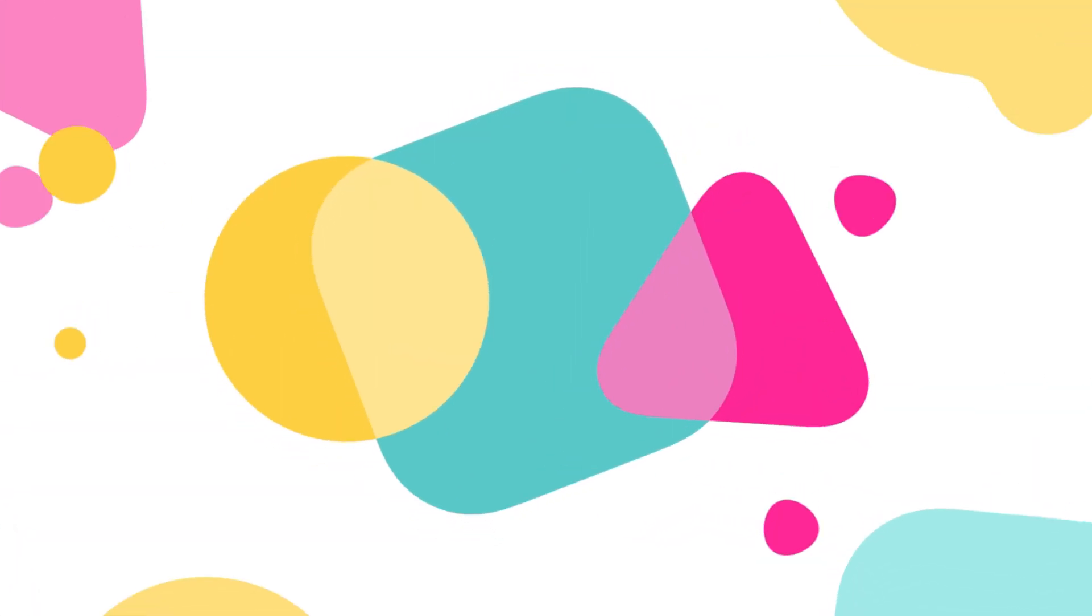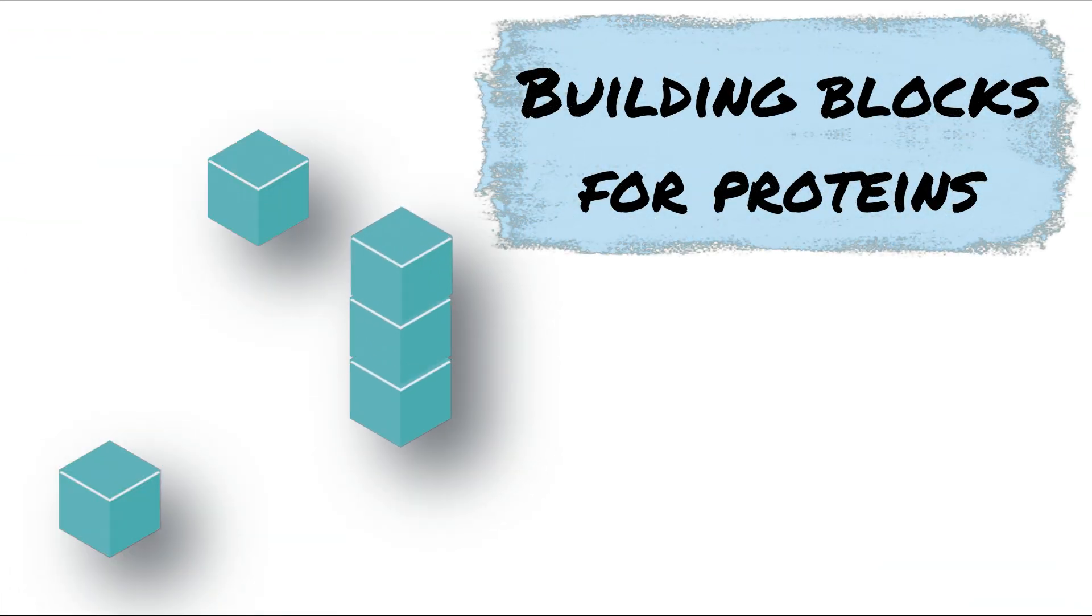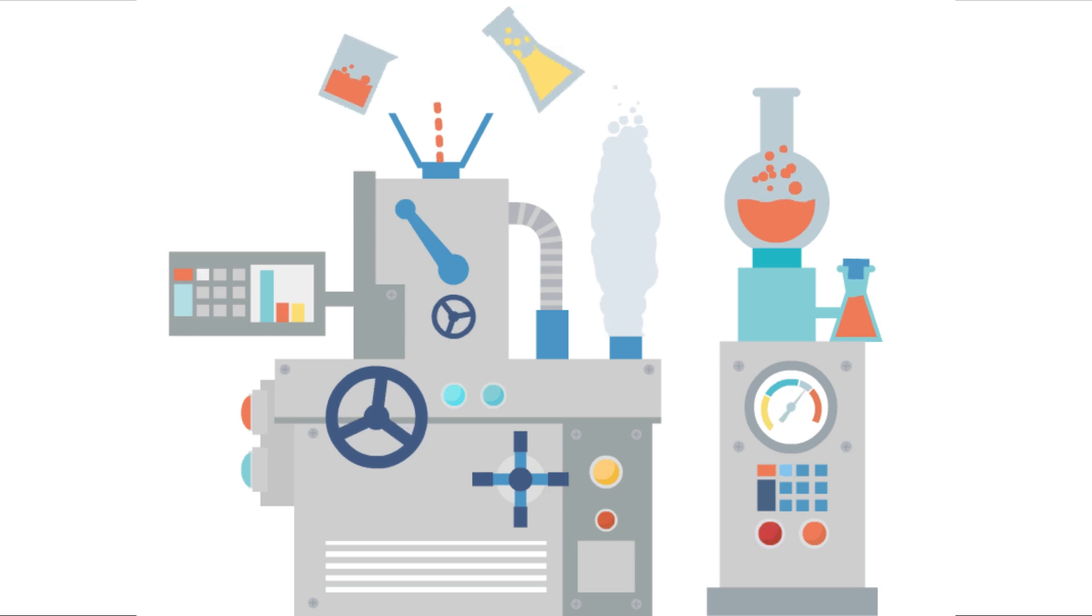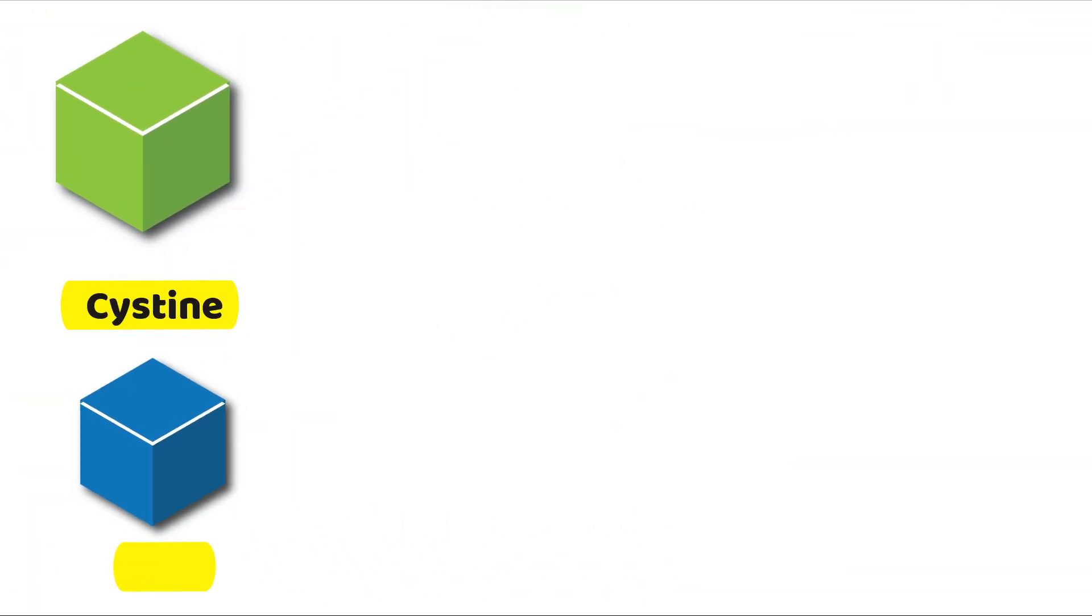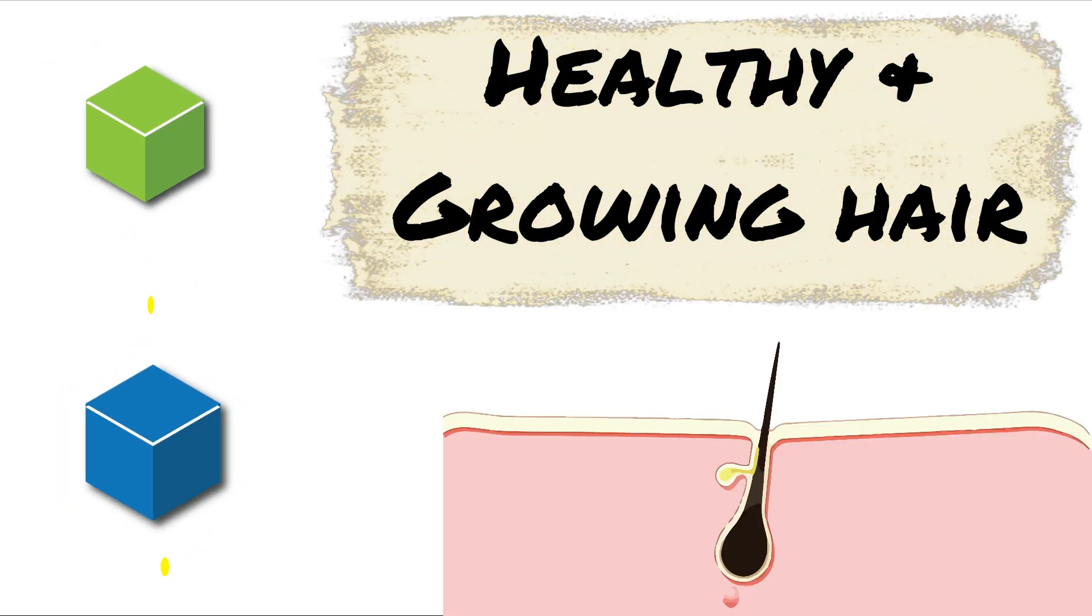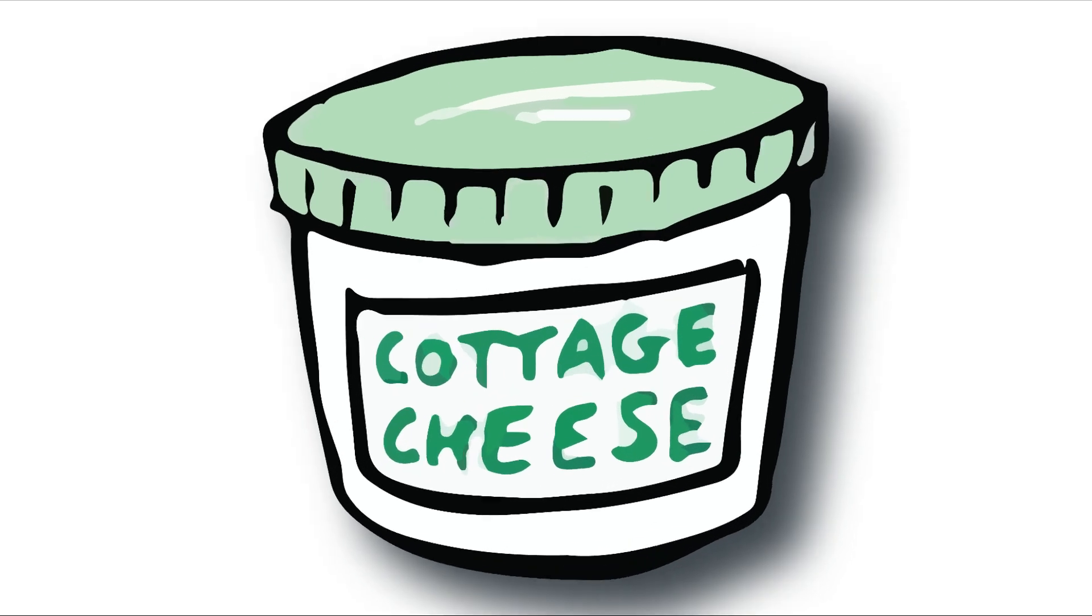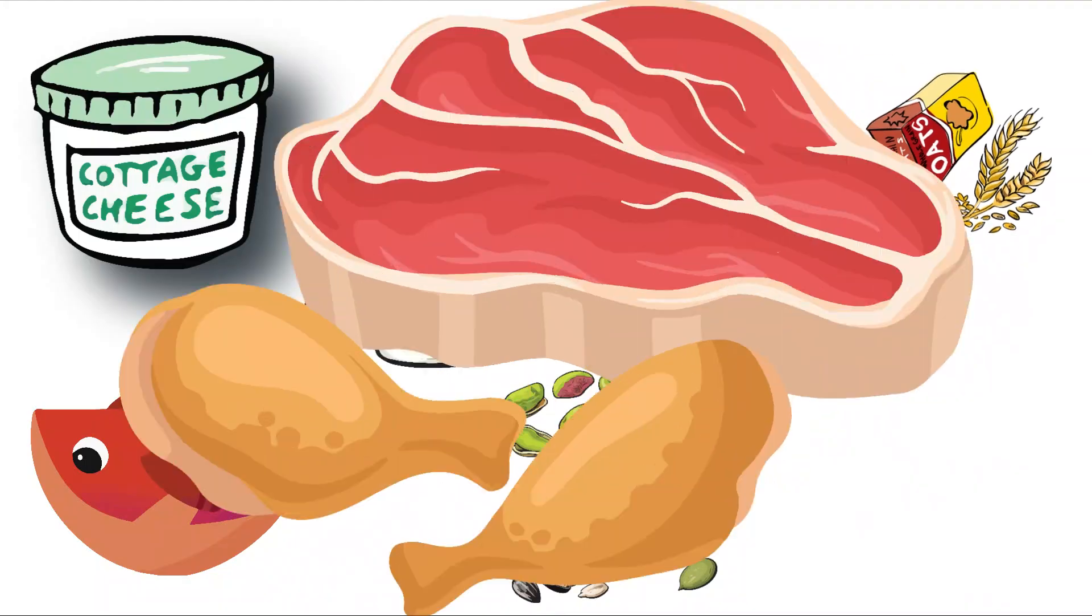The next nutrient on the list are amino acids. These are the building blocks for proteins and they help your body work the way it should. Some amino acids such as cysteine and L-lysine play a special role in keeping your hair healthy and growing. Good food sources include cottage cheese, fish, eggs, seeds and nuts, whole grains, and meat.